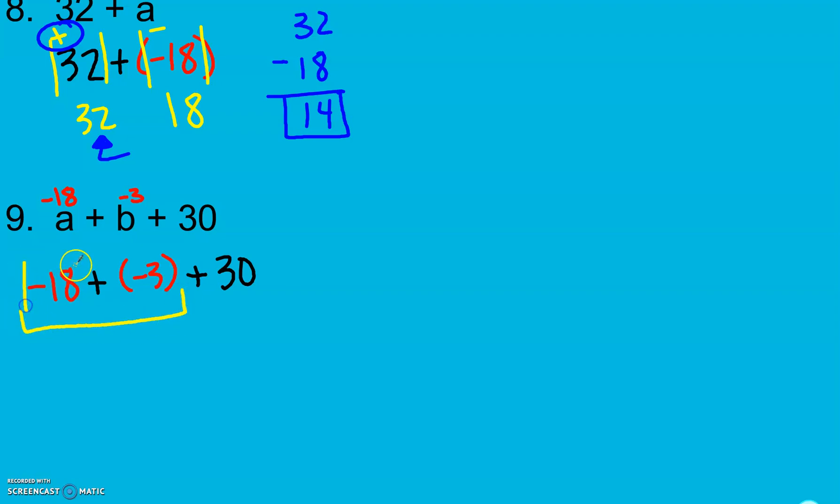I'm going to take my absolute value of negative 18, and my absolute value of negative 3. Here both my signs are the same. So I'm going to go ahead and find my sum and add, which gives me 21.